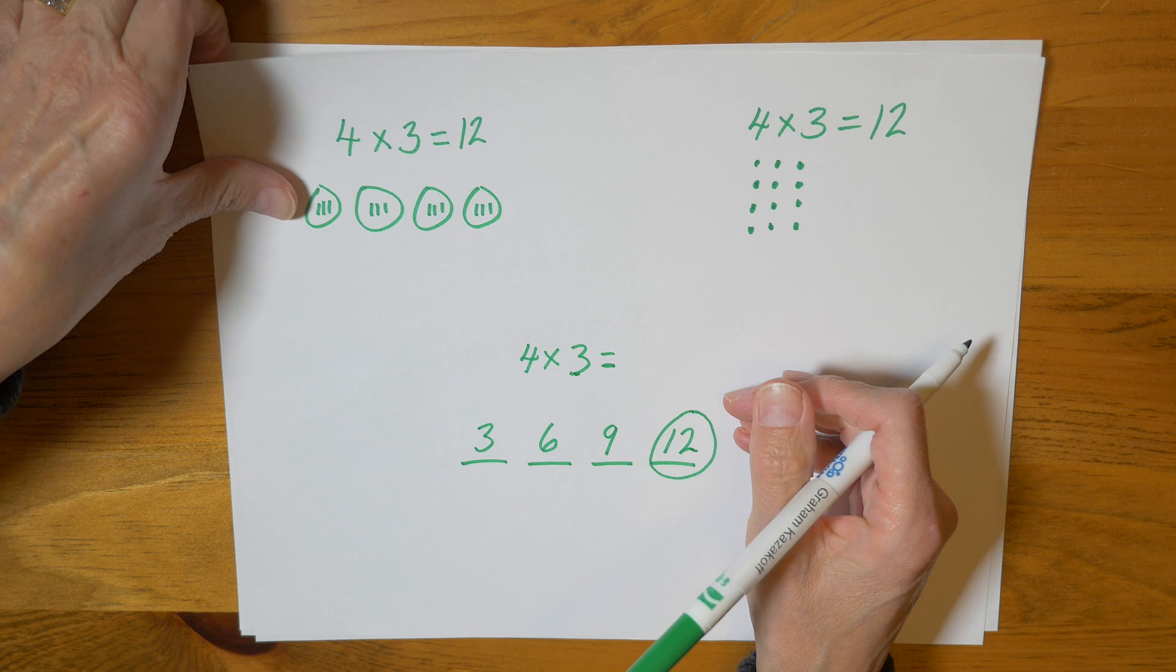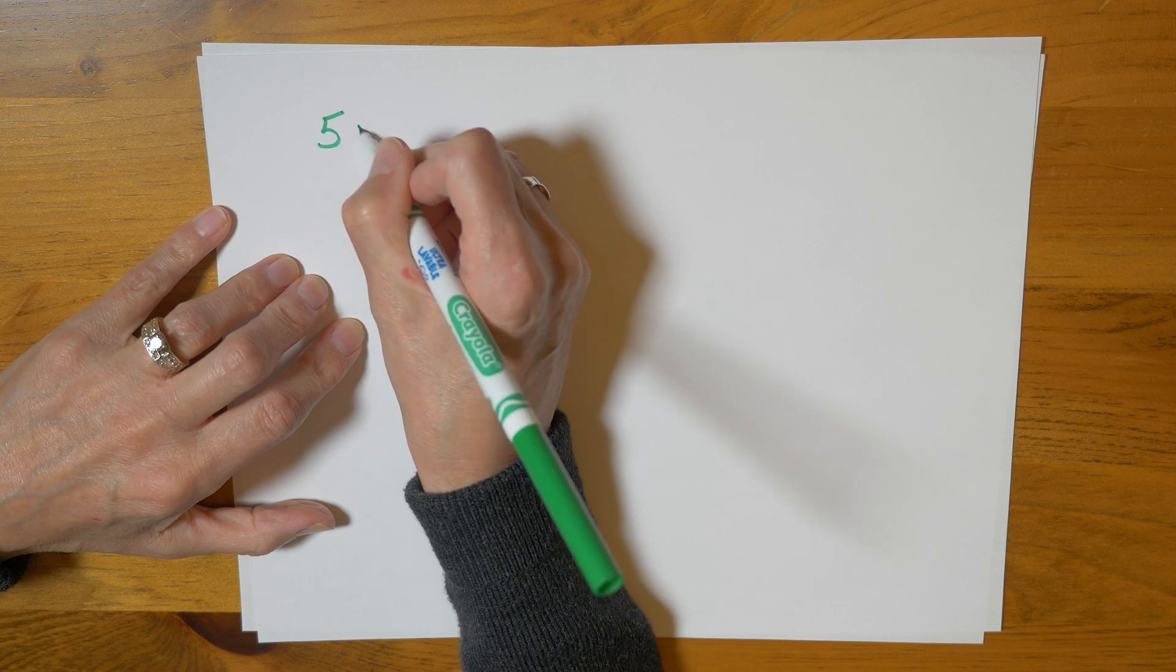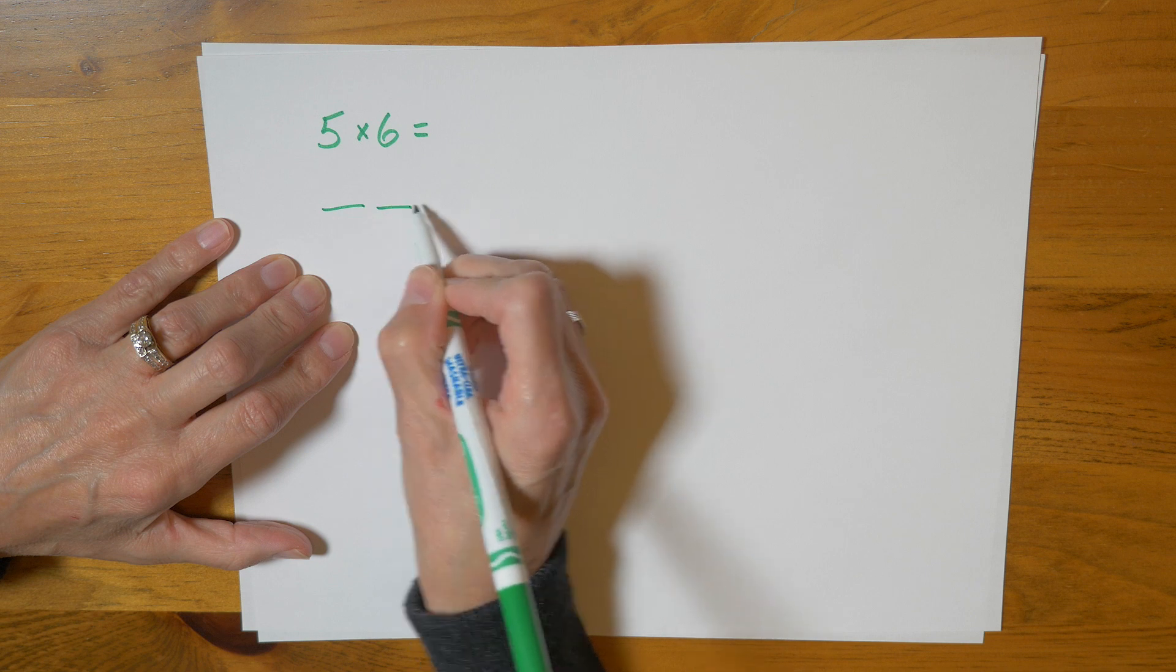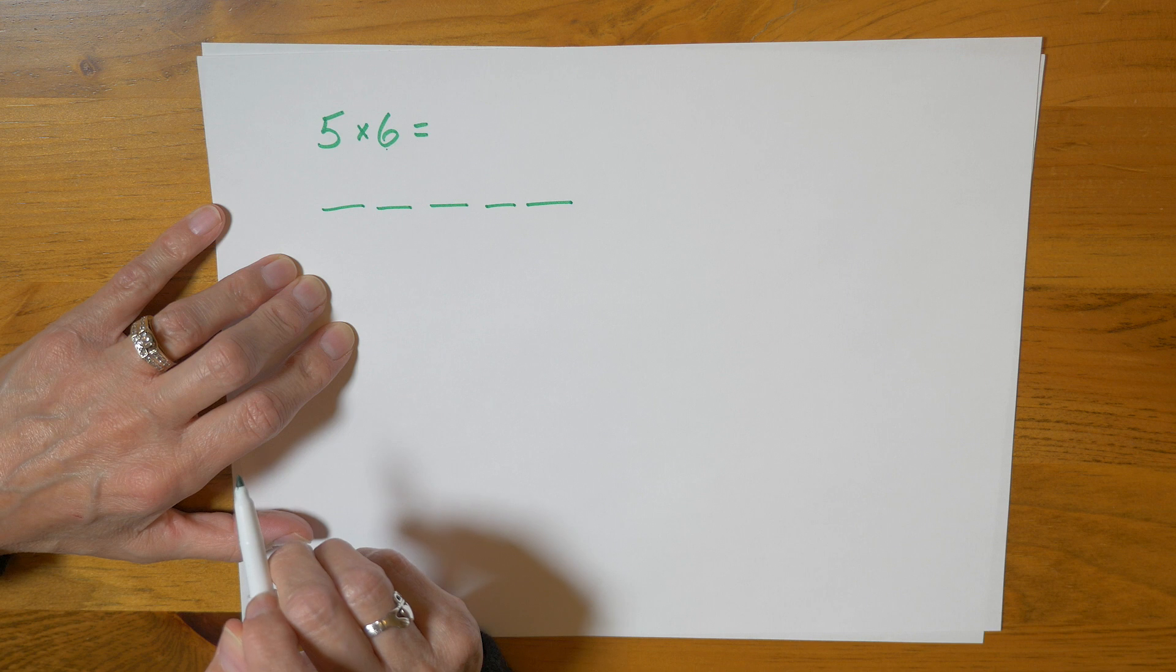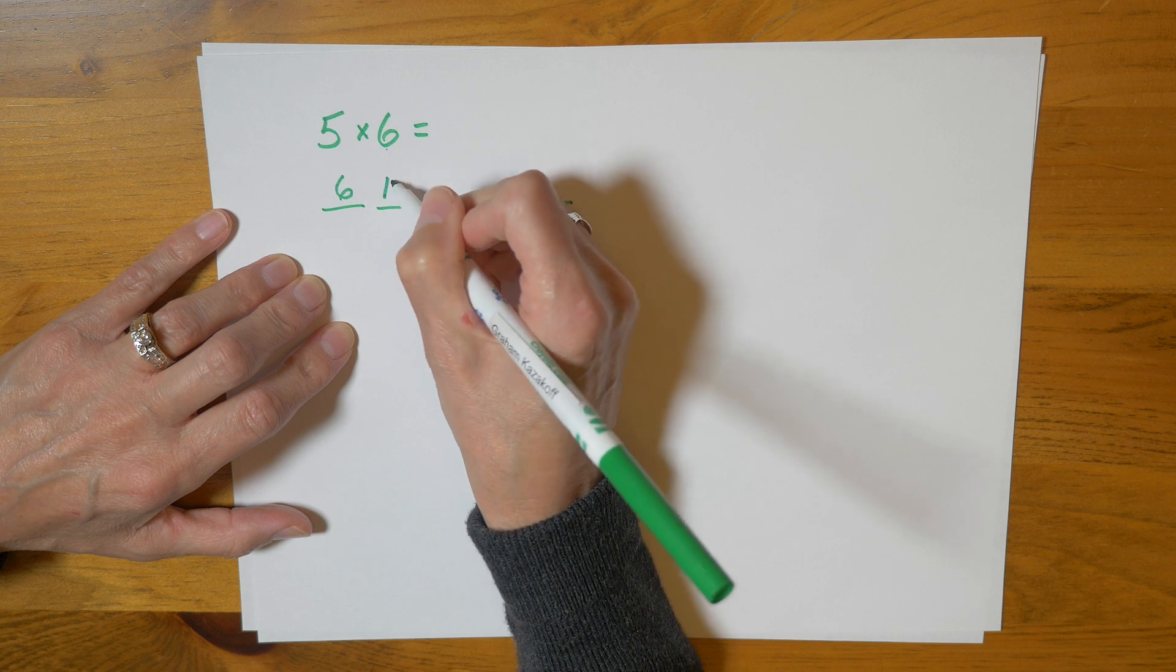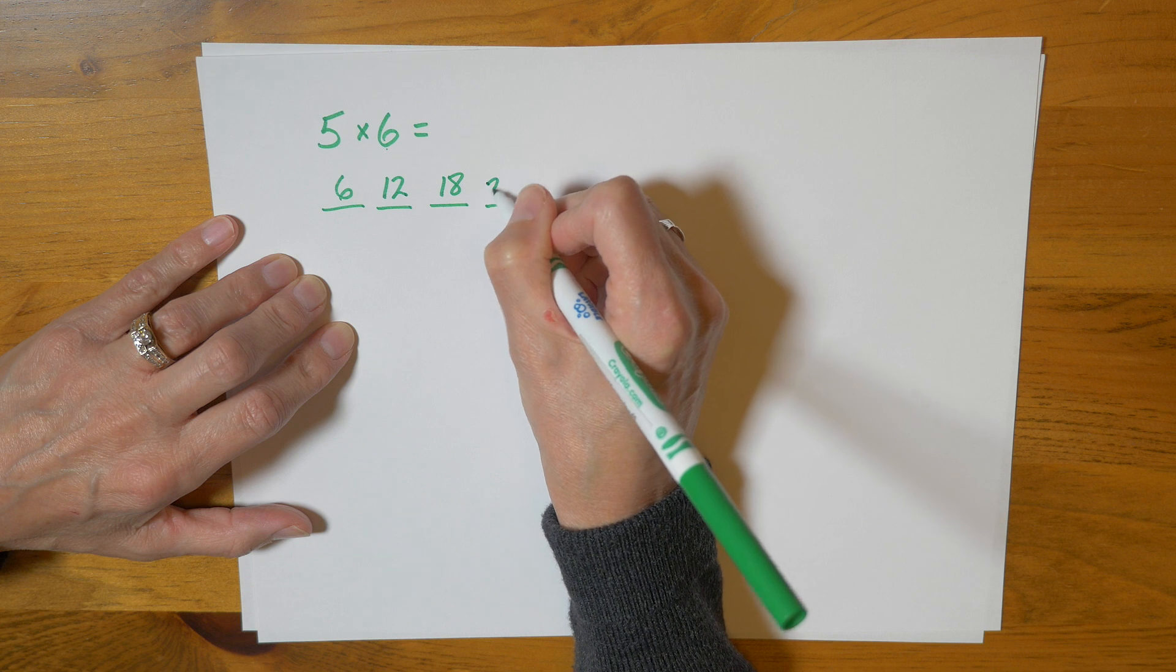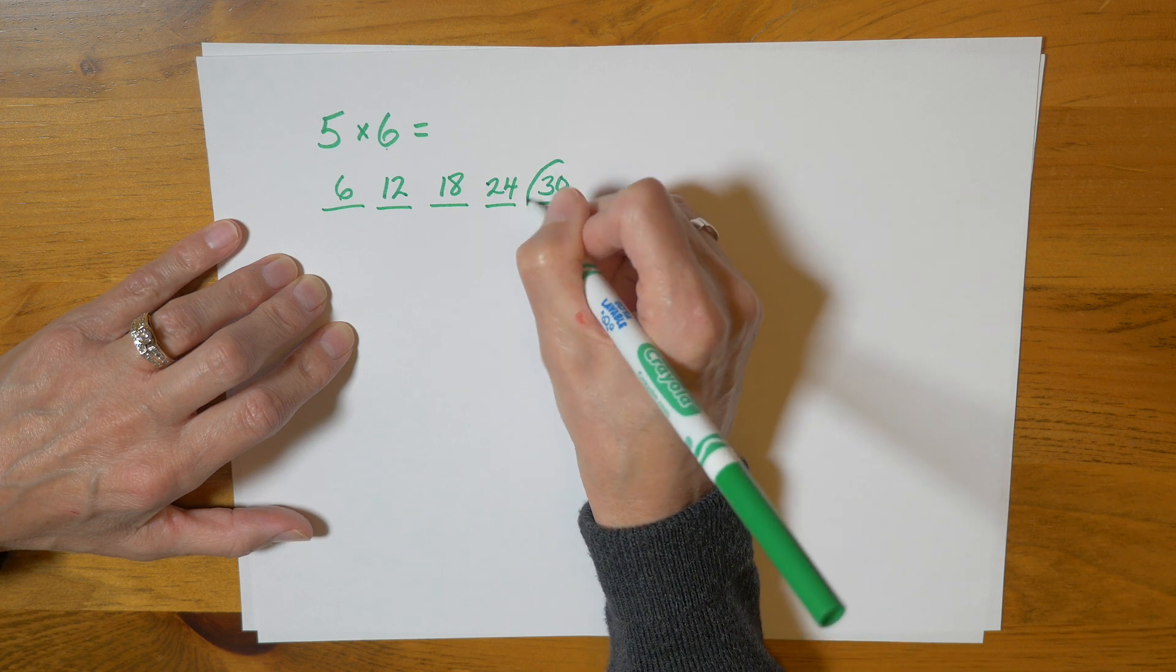I'm going to demonstrate a couple more of skip counting just so you can get the hang of it. Let's try five times six. So I give myself five spaces and I'm going to skip count by sixes. That's a little tricky. But you would go six, count on six each time. Twelve, eighteen, twenty-four, thirty. So there's my answer.